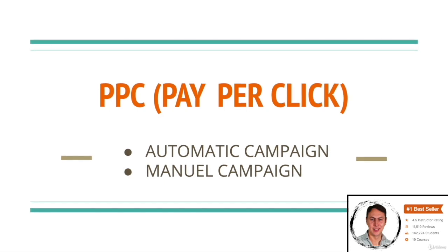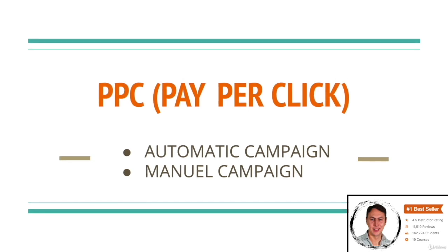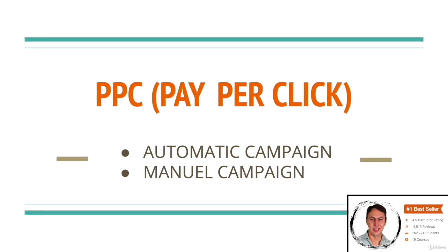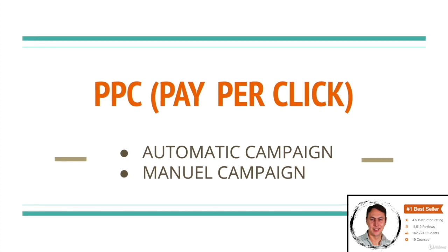This keyword learning process is very important information you can't normally get from Amazon. By using PPC ads, we can discover all the keywords related to our product. In this way, we can organize manual campaigns with those keywords and improve our product listing. We can bring our product to the first rankings with better keywords. Overall, PPC helps increase sales, supports the launch phase, and tests keywords related to our product.